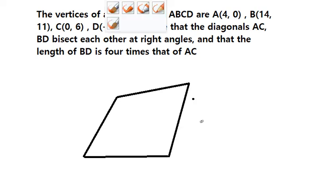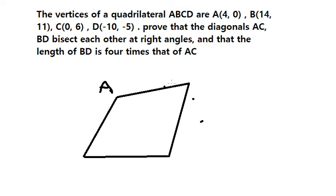This is the example: quadrilateral ABCD. On the question we need to prove that the diagonals AC and BD bisect each other at right angles. That means we have AC and DB, and the angle here should be about 90 degrees. So we need to prove this.